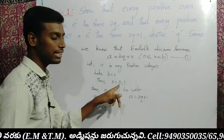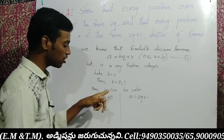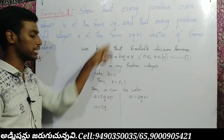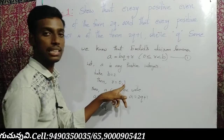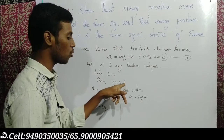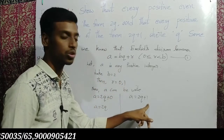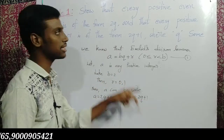When r equals 0, that gives an even number, so for even numbers we write 2q. When r equals 1, that gives an odd number, so for odd numbers we write 2q plus 1.